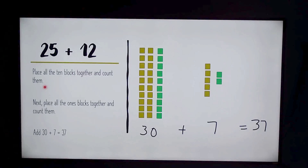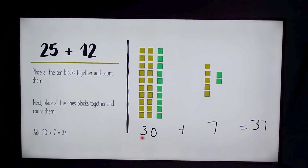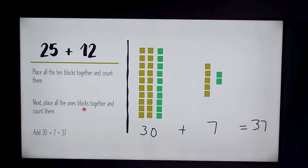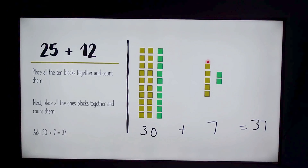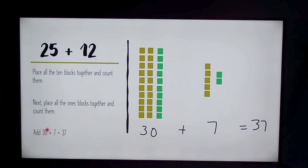Next we place all the 10-blocks together and count them — there is a total of 30. Then we place all the 1-blocks together and count them — we got 7 total. Next we add 30 plus 7, which equals 37.